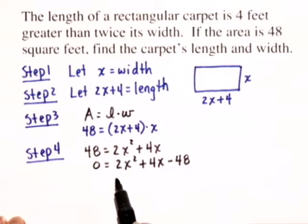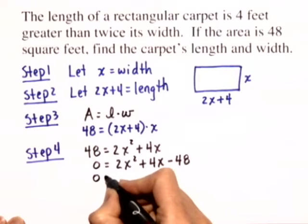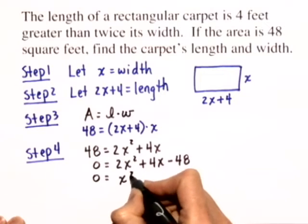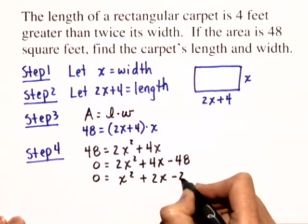Each term is divisible by 2, and we'll have some smaller numbers that we need to factor. Let's divide every term on both sides of the equation by 2, and we'll get 0 equals x squared plus 2x minus 24.